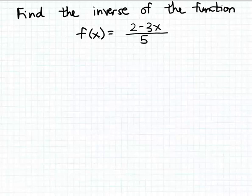What I'm going to do is replace the function notation for the output in this equation by an output variable. Let's use y as the output variable, although it really doesn't matter what output variable you choose. So I'm going to rewrite this function formula as y equals 2 minus 3x over 5.